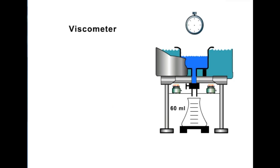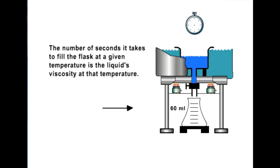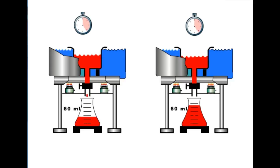A viscometer, the device used to measure a liquid's viscosity, consists of a small reservoir surrounded by a water bath, used to heat and maintain the liquid at a constant temperature. There is a small orifice below the reservoir, through which the liquid can pass once it is heated to a specified temperature. A stopwatch is used to determine how much time it takes to fill a 60 milliliter flask. The number of seconds that it takes to fill the flask at a given temperature is the liquid's viscosity at that temperature. As illustrated, the fluid on the right has a lower viscosity than the fluid on the left.